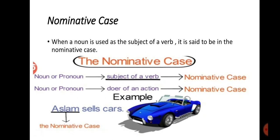Children, when a noun or pronoun is the doer of an action — doer means the one who does something — it is in the nominative case. For example, 'Aslam sells cars.' Here Aslam is in the nominative case, because Aslam is the doer: Aslam is the one who sells cars, and that's why Aslam is in the nominative case.